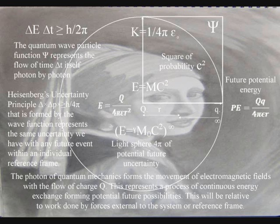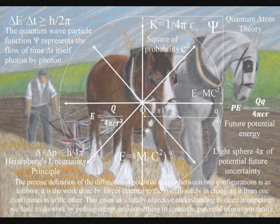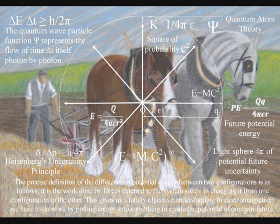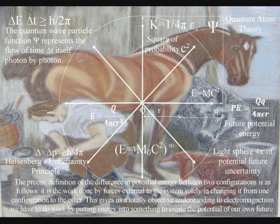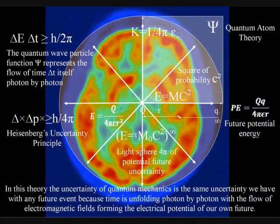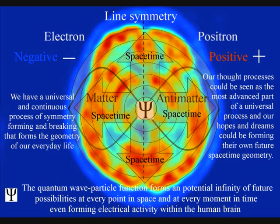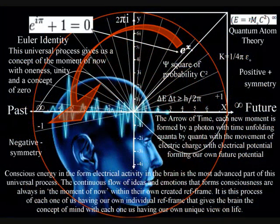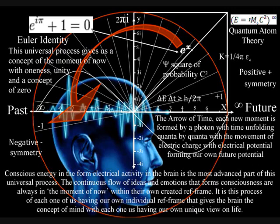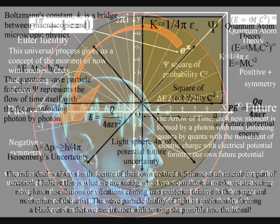The voltage is the work done to bring a test charge, little q, from infinity all the way in to a point that is a distance r away from the main charge Q. This gives us a totally objective understanding of electromagnetism — we have to do work by putting energy into something to create the potential of our own future. Because this is a universal process, electrical activity in the brain can be seen as the most advanced part of this universal process. Therefore, conscious thought is always in the moment of now, with a continuous stream of thoughts and ideas that can comprehend this process as time — an interactive process of continuous creation with a potential future infinity of possibilities.